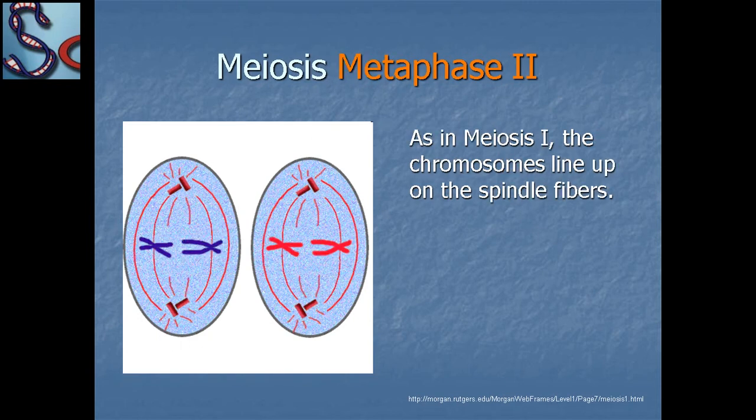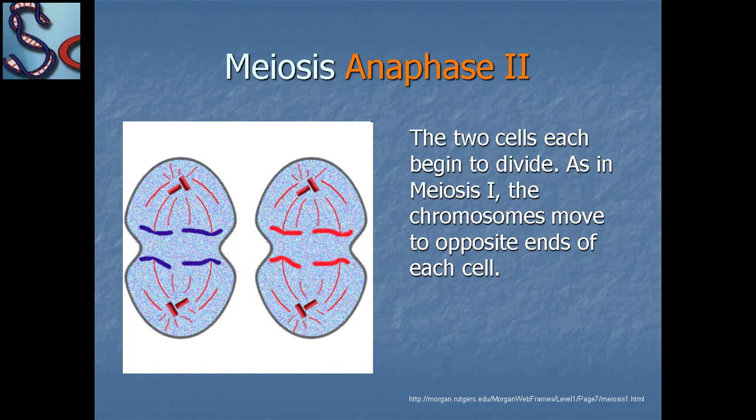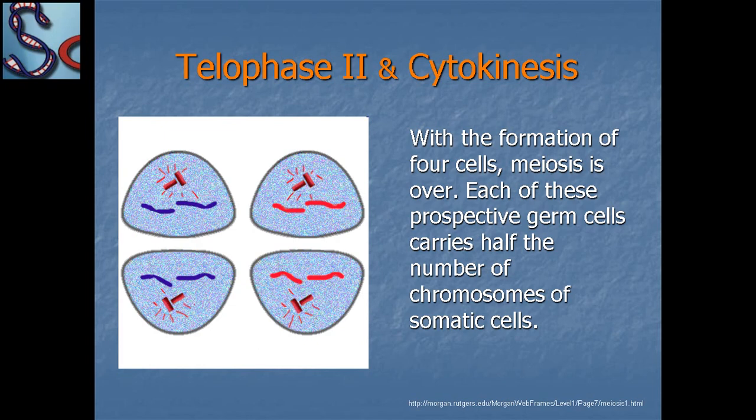After meiosis one, in metaphase two the chromosomes line up on the spindle fibers, just as in meiosis one. Then the two cells each begin to divide, and in anaphase two the chromosomes move to the opposite sides of each cell. With the formation of four cells, meiosis is over. Each of these prospective germ cells carries half the number of chromosomes of the somatic cells.